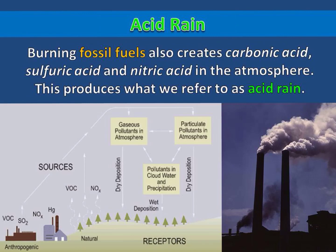Burning fossil fuels also creates carbonic acid, sulfuric acid, and nitric acid in the atmosphere. This produces what we refer to as acid rain.